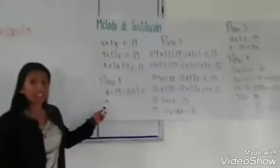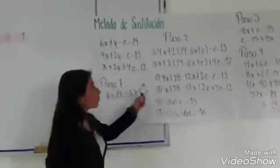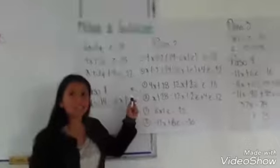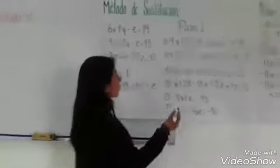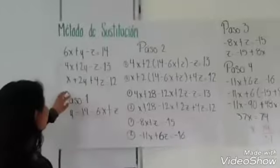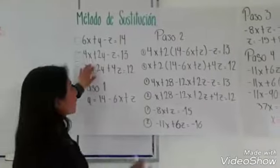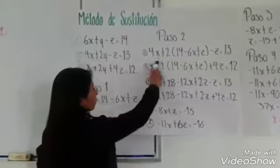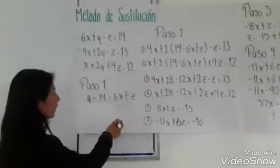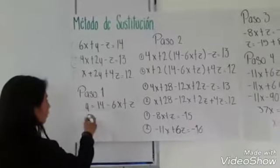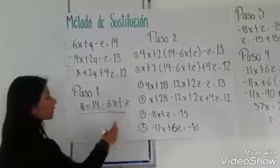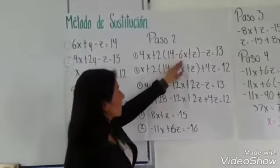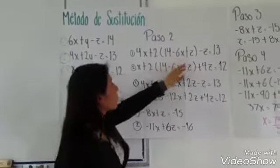Nosotros elegimos Y. El segundo paso es sustituirla. Por lo tanto, tomamos la segunda ecuación y vamos a sustituir por lo que nos había salido en Y, que es 14 menos 6X más Z.